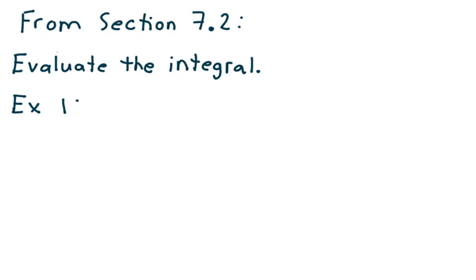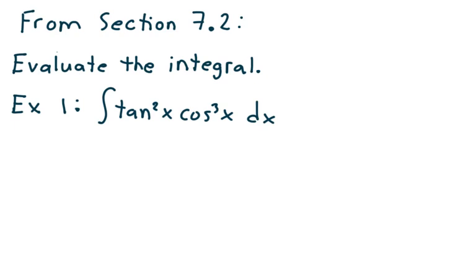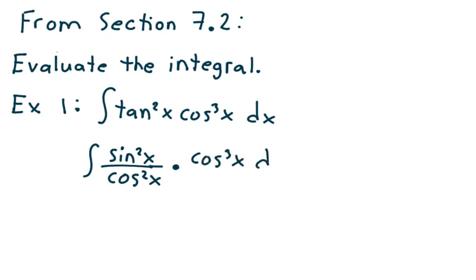Suppose it says the integral of tangent squared x cosine cubed x dx. Tangents and cosines don't go together, but sines and cosines do. So what I would do is write tangent squared x as sine squared x over cosine squared x, and then multiply by cosine cubed x dx.